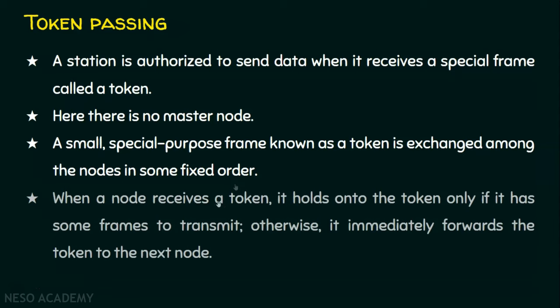When a node receives a token, it holds on to it only if it has some frames to transmit. Otherwise, it immediately forwards the token to the next node. Whenever a node receives a token and holds it, it starts transmitting the frame. If that station has no data, it immediately forwards the token to the next node.